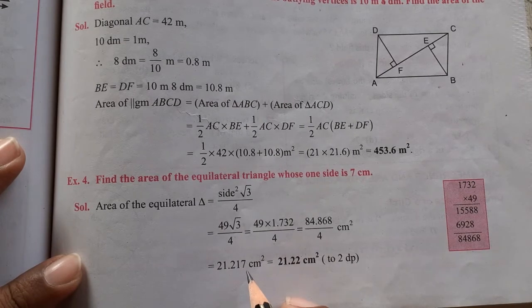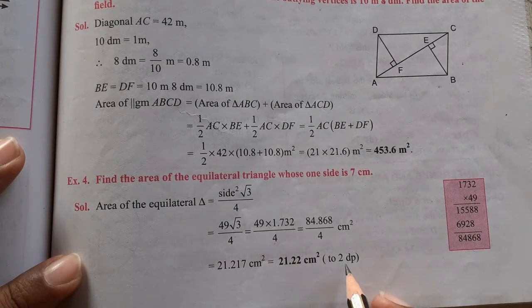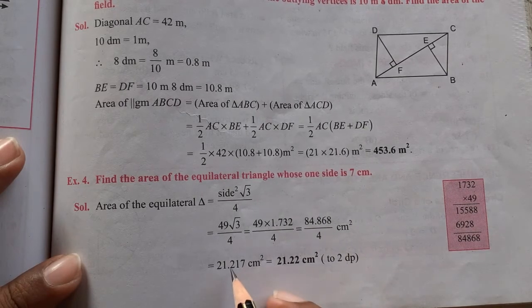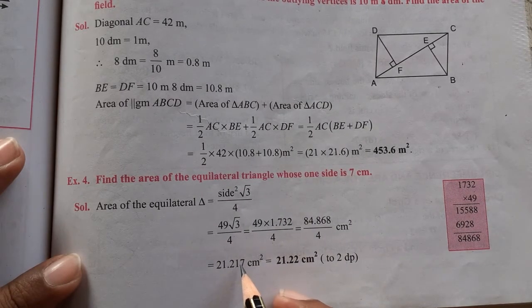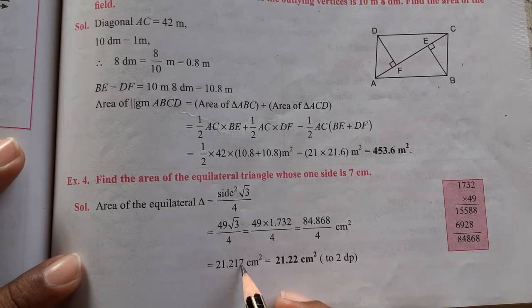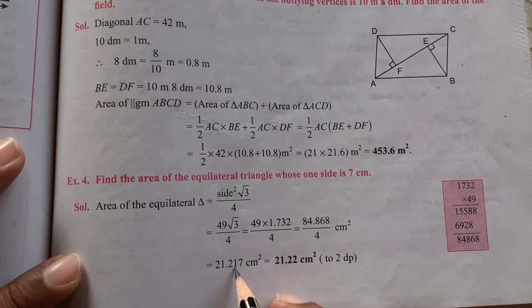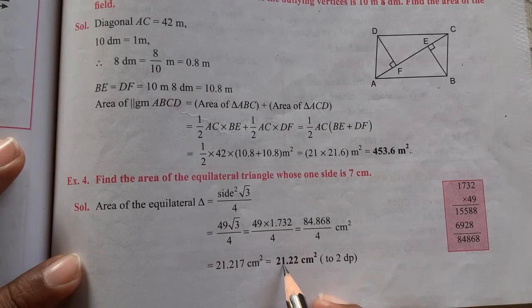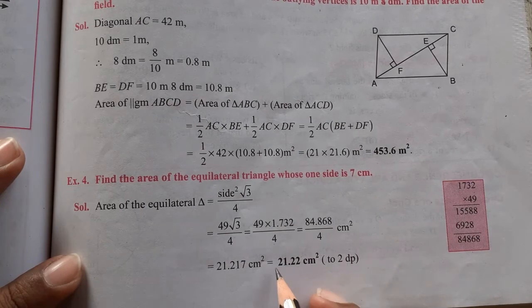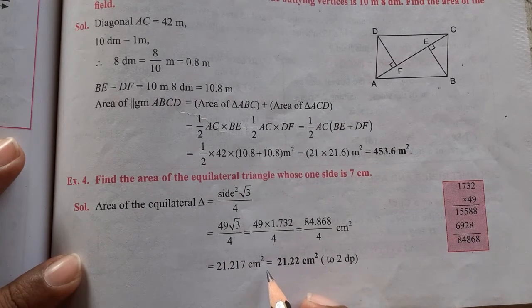But it is not correct to 2dp. 2dp means 2 decimal place, so when we correct it to 2 decimal place, then the 1 was 2 and the 7 was removed, because it is 7, greater than 5, so we increase the number before. So 21.22 cm square is our 2 decimal place, the correct area of that equilateral triangle.